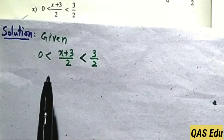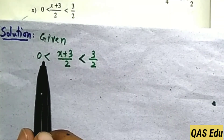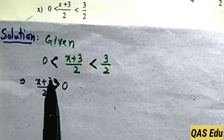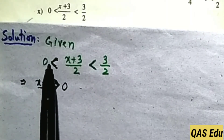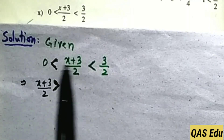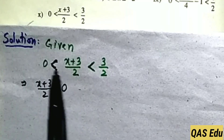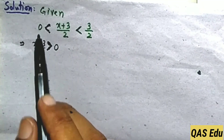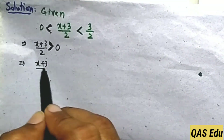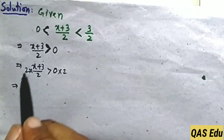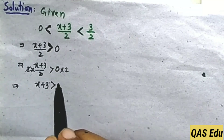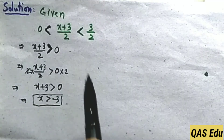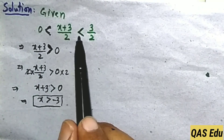Part 10: Two statements — (x+3)/2 is greater than 0, and (x+3)/2 is less than 3/2. For statement one, (x+3)/2 is greater than 0: multiply both sides by 2. The 2s cancel, giving x plus 3 is greater than 0. Move 3 to the right as minus 3. So x is greater than minus 3. That is our first statement.